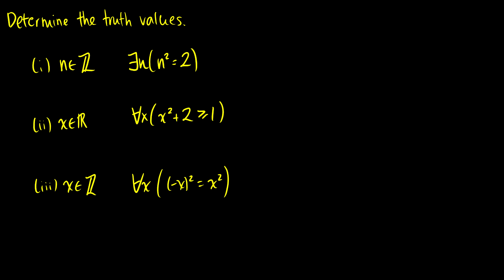We want to determine the truth values of the following statements. For n in the integers, there exists an n such that n squared is equal to 2. Well, we know that n would have to equal plus or minus root 2, so there is no n in the integers that when you square it equals 2. There doesn't exist one, therefore this first statement is false.